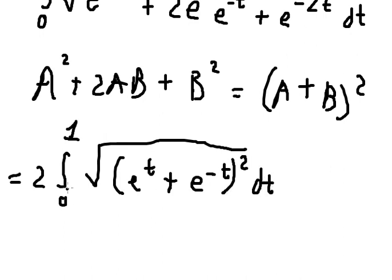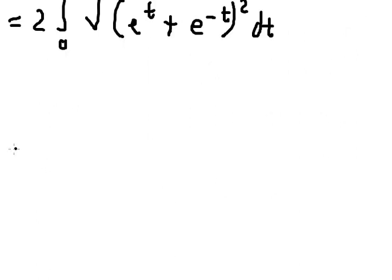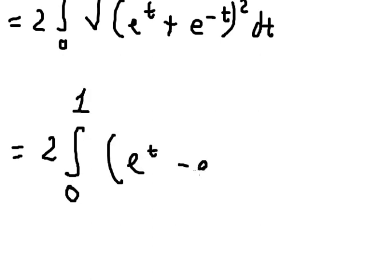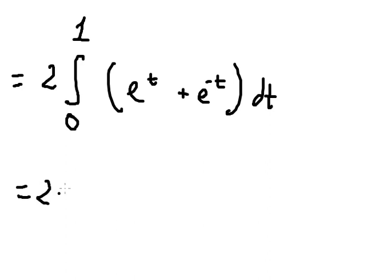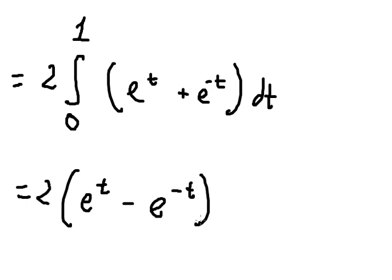We know that from zero to one this expression is always positive, so we can remove the square root and we have 2 times (e to the power of t plus e to the power of negative t). The integral of e to the power of t is e to the power of t, and the integral of e to the power of negative t is negative e to the power of negative t, evaluated from zero to one.